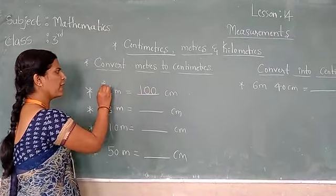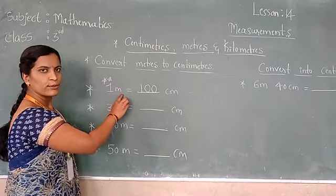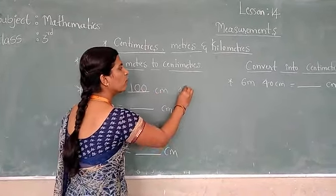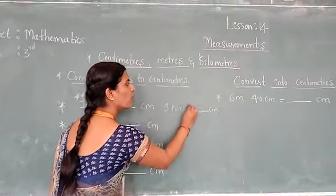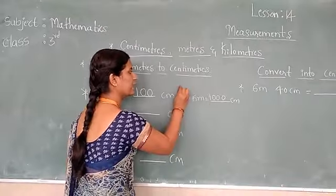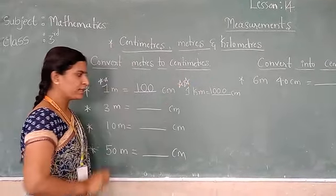This you have to remember, okay? One meter equals 100 centimeters. One more: one kilometer equals how many meters? 1000 meters. These are the two standard units you have to remember.